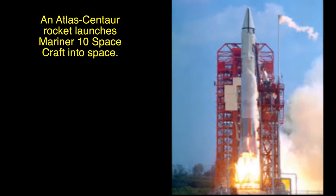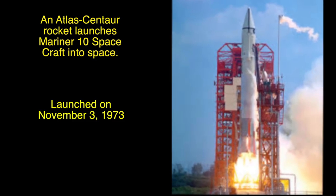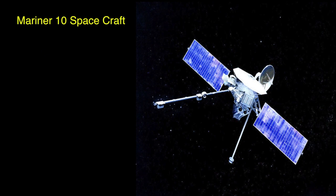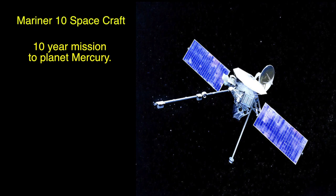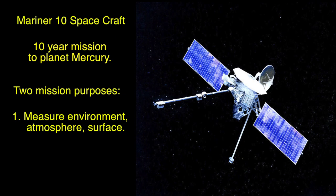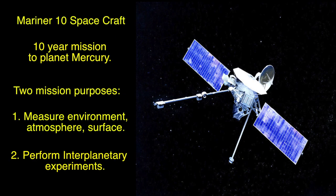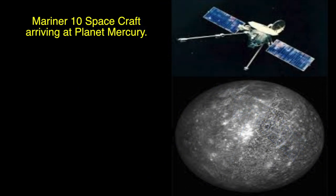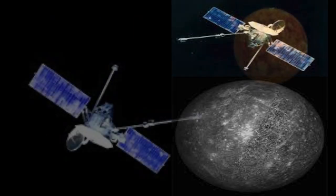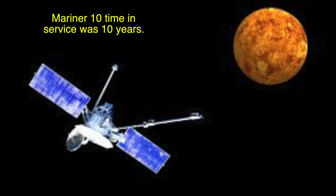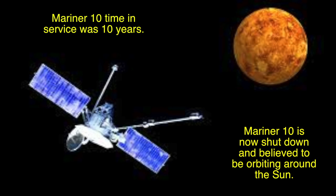An Atlas Centaur rocket launches the Mariner 10 spacecraft, launched November 3rd, 1973. Mariner 10 had a 10-year mission to planet Mercury with two mission purposes: one, to measure environment, atmosphere, and surface; two, to perform interplanetary experiments. Mariner 10 arrived at planet Mercury on March 29, 1974. Its time in service was 10 years. Mariner 10 is now shut down and believed to be orbiting around the sun.